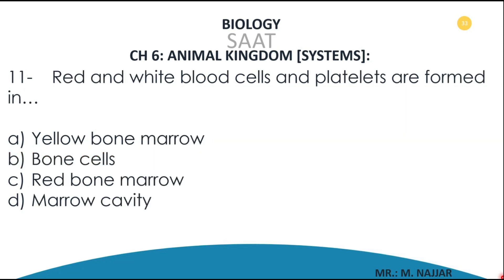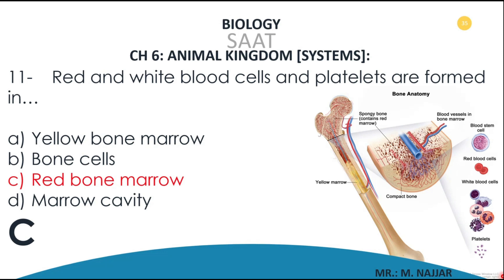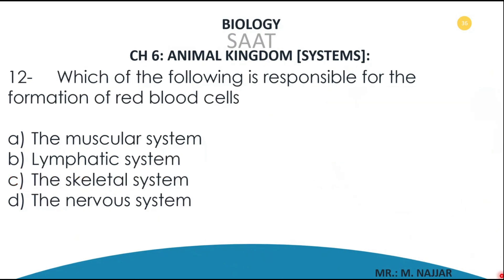Question number eleven: red and white blood cells and platelets are formed in A) yellow bone marrow, B) bone cells, C) red bone marrow, D) marrow cavity. The correct answer is C — red bone marrow. This is the red bone marrow where all blood components are made, including red blood cells, blood stem cells, all types of white blood cells, and platelets.